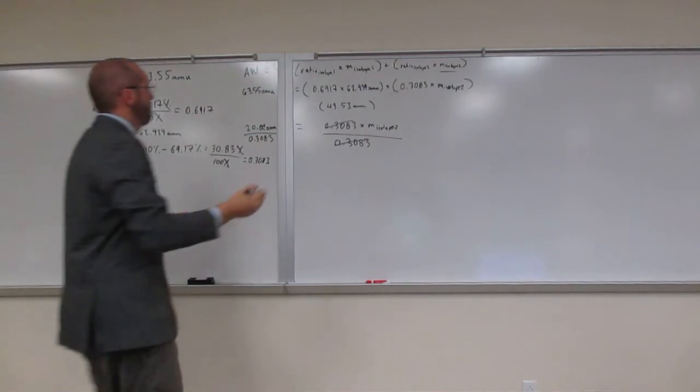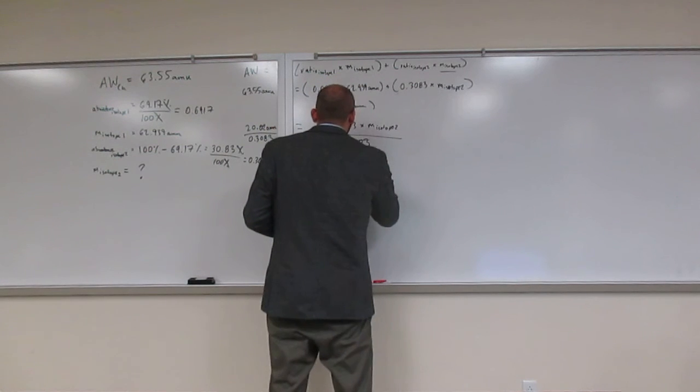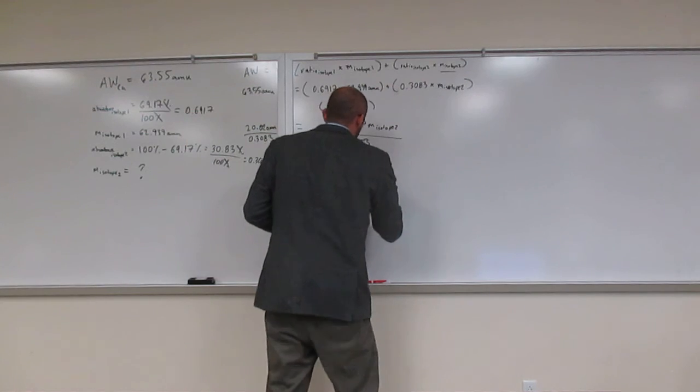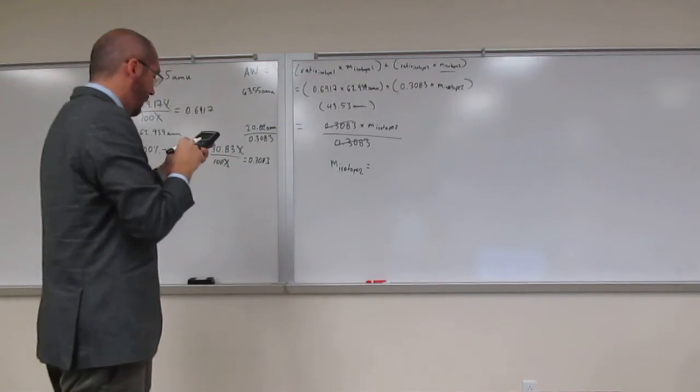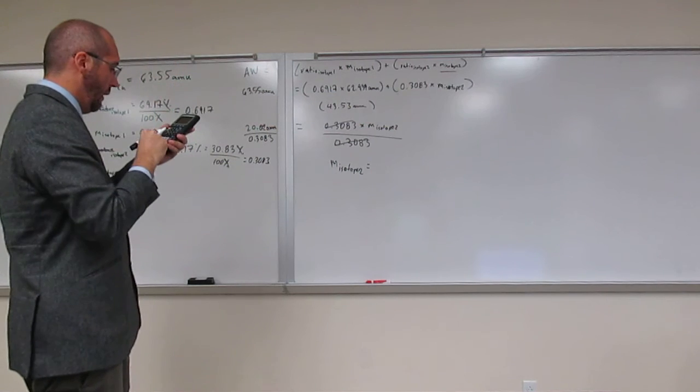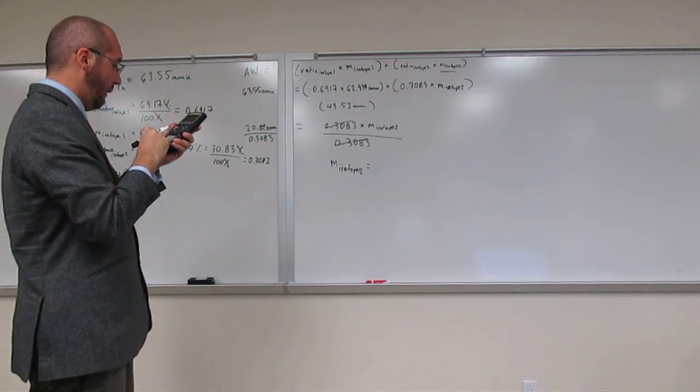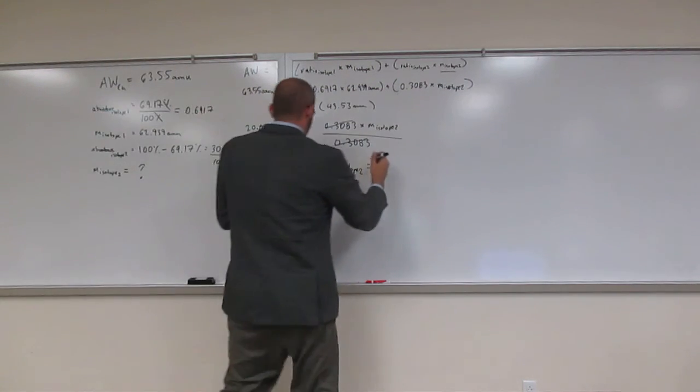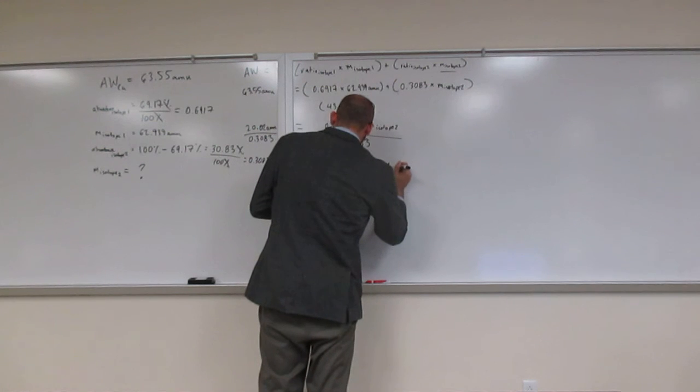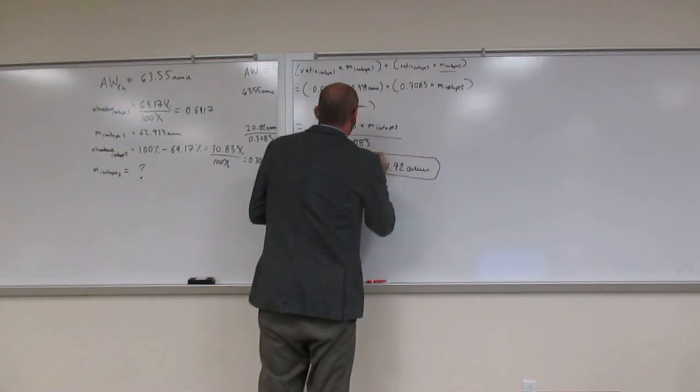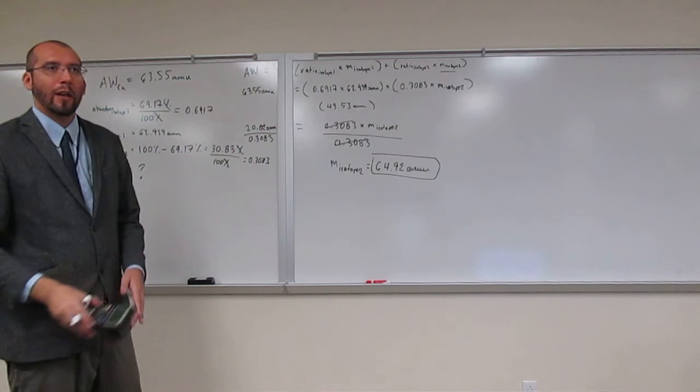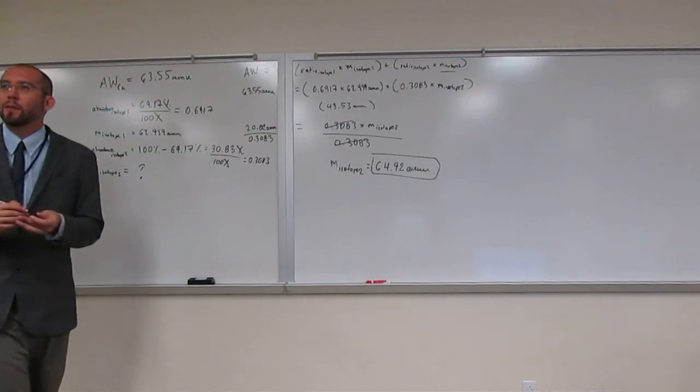So that's going to give me this number is going to be the mass of isotope 2. Is everybody okay with what I'm saying? So the mass of isotope 2 is going to be 20.015, whatever, divided by 0.3083. And hopefully I get the same number as you guys, 64.92 AMU. Okay, so why did I only take it to 4? Because of significant digits.